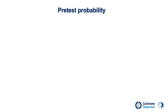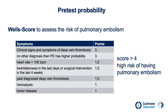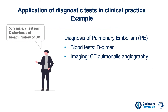Coming back to our example, to determine the pre-test probability of pulmonary embolism, the Wells score is a commonly used tool to assess a patient's risk based on a number of clinical features. Several symptoms and risk factors are assigned points and added together. If the score is higher than four points, there is a high risk of having a pulmonary embolism. To diagnose pulmonary embolism, a D-dimer blood test measuring a small protein fragment resulting from degradation of blood clots, or CT angiography, are commonly used diagnostic tests.